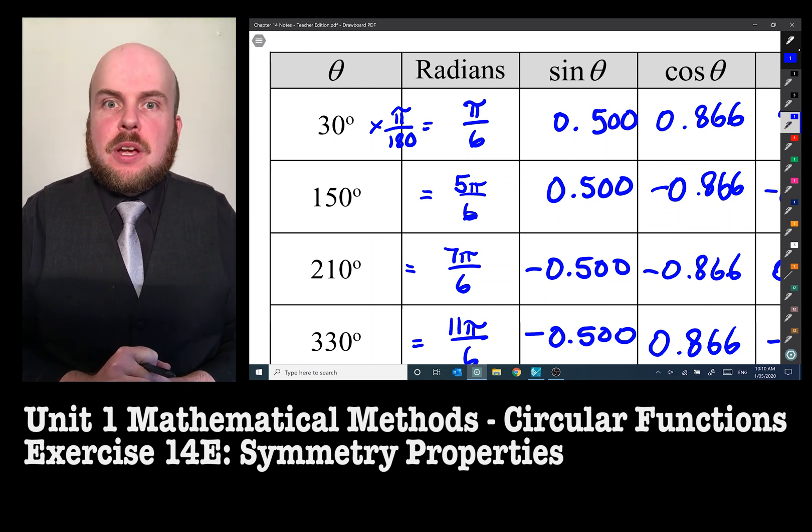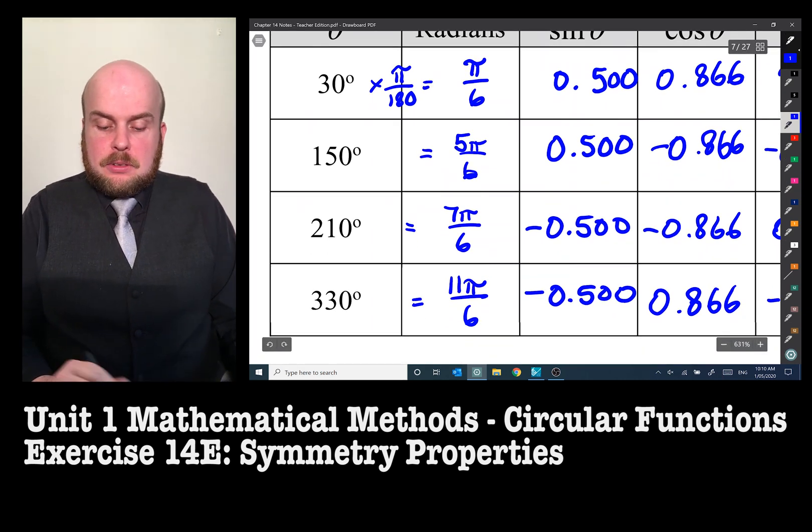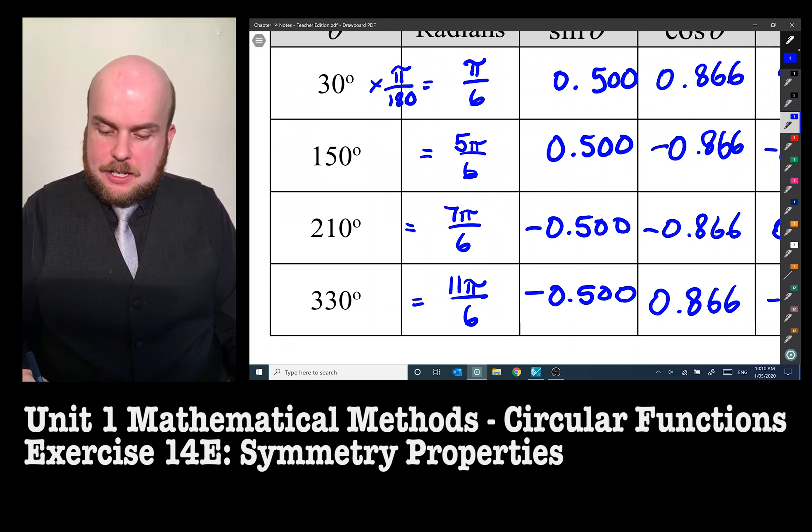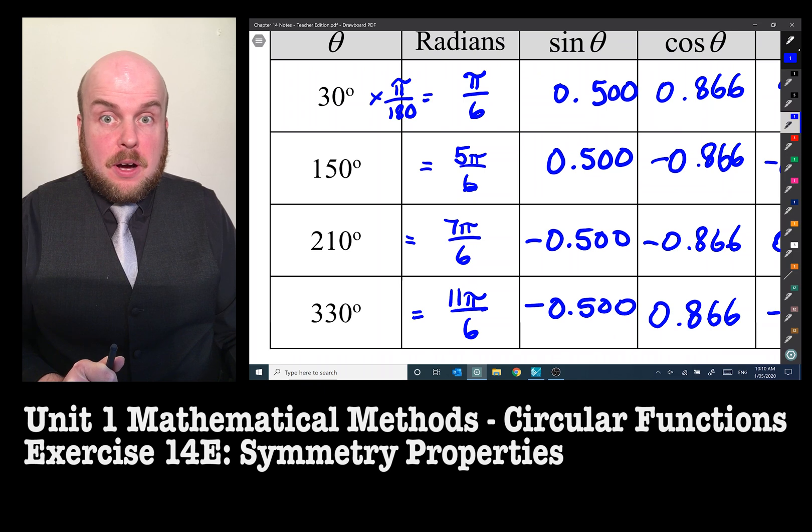So now we just need to have a look at what 330 degrees is. Now we know according to this that the sine of 330 degrees is equal to -0.500 and the cos of 330 degrees is equal to 0.866. Let's see whether or not this is confirmed by using symmetry.